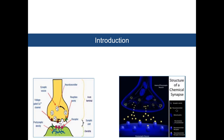The diagrams show the structure of a chemical synapse, clearly showing the axon terminal, synaptic cleft, and dendrite. The neurotransmitter is released into the synaptic cleft from the axon terminal, with voltage-gated Ca2+ ions present. Synaptic vesicles release neurotransmitter which is taken up through receptors to become part of the postsynaptic density on the dendrite side through the synaptic cell membrane.